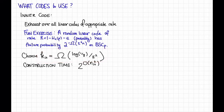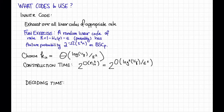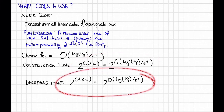The decoding time for the inner code is 2 to the big O of k_in, because we exhaust over all possible codewords to find the closest one. With our choice of k_in, this is 2 to the big O of log(1/gamma) / epsilon². So now we know the construction time and decoding time for C_in. Let's put the decoding time T_in = 2 to the big O of log(1/gamma) / epsilon² back in our big table.